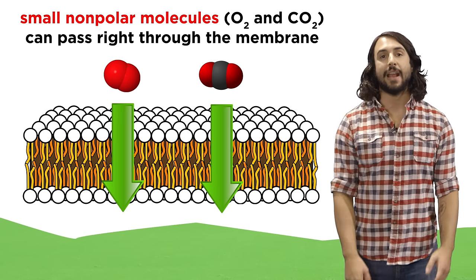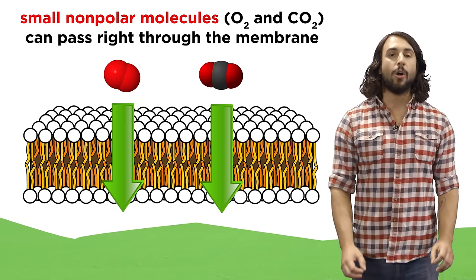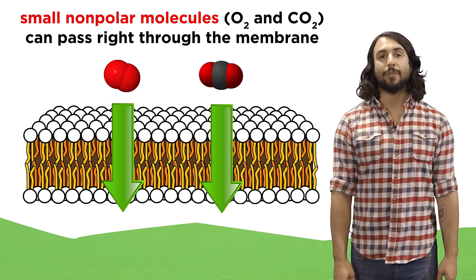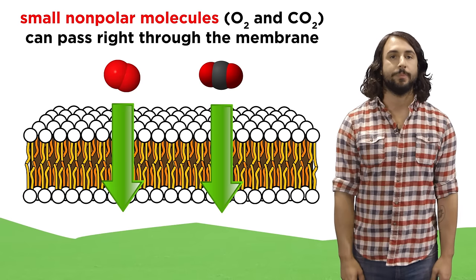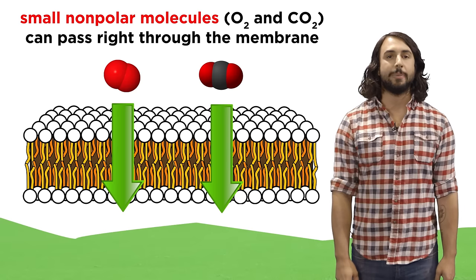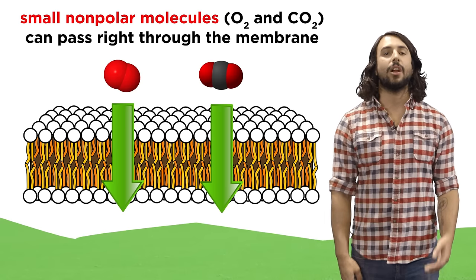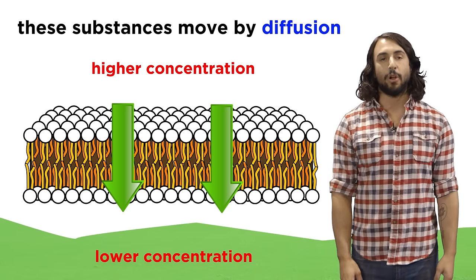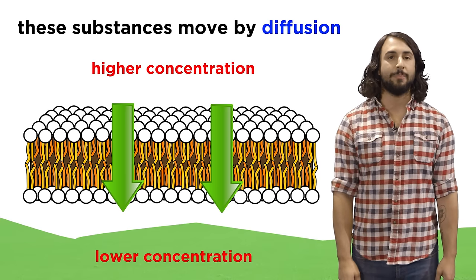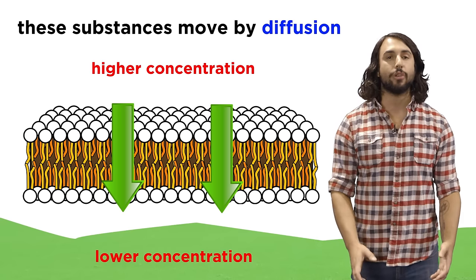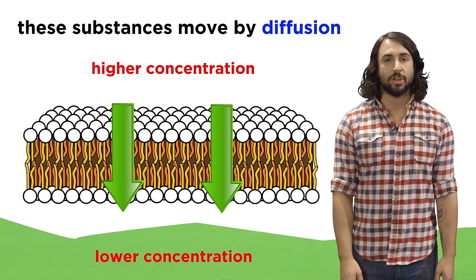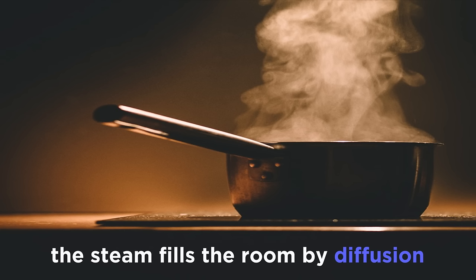Some molecules don't need help to get through the membrane. Small nonpolar molecules are able to go right through the lipid bilayer because they are not repelled by this nonpolar material. This is how oxygen and carbon dioxide get across, since they are tiny and nonpolar. This process is an example of diffusion, where molecules move across the membrane along a concentration gradient, spontaneously moving from higher concentration to lower concentration, just the same way gases spontaneously fill up a room.